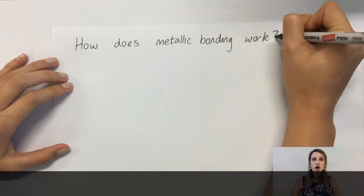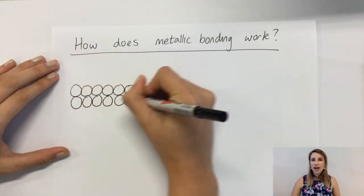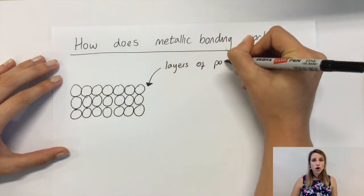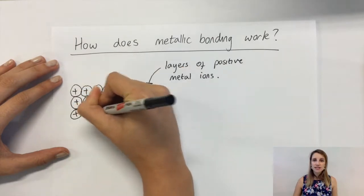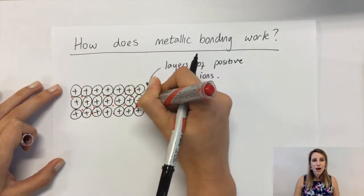This is what the structure of a metal looks like. You've got layers of positive metal ions and a sea of delocalized electrons. Delocalized just means that those electrons are free to move throughout the structure.